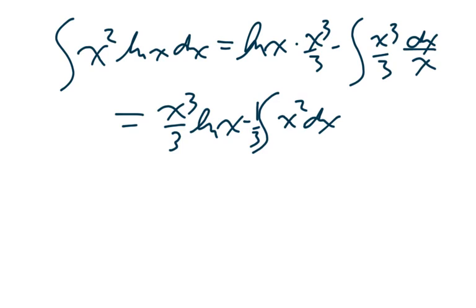So this integral is x cubed over 3 log x minus the integral of x squared, and I'll put the 1/3 out front: 1/3 x squared dx. And well, x squared dx, the integral is going to be x cubed over 3, so we're going to have a 1/9 there. So the final answer for this anti-derivative: x cubed over 3 log x minus 1/9 x cubed plus c.